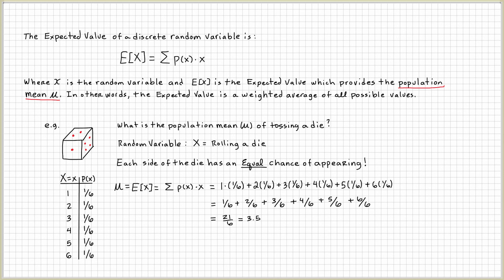This tells us that on average, when you're tossing a die, you're going to get a value of 3.5 for each toss.